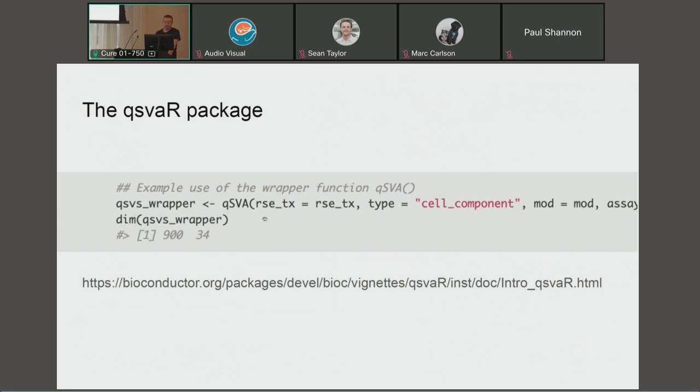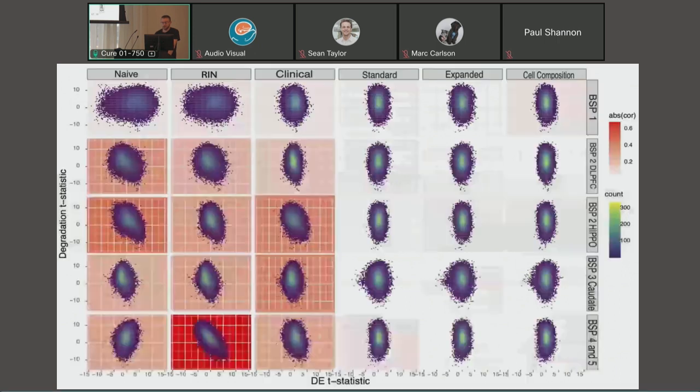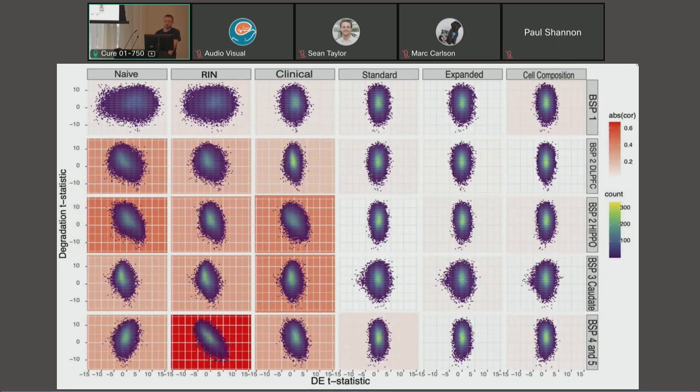And so this is the qSVA function. It takes a range summarized experiment of transcripts. There's a couple models that I don't have time to explain here. But I want to get to some results. So this is all of our BrainSeq data across different experiments. By color here, you can see which models are still heavily associated with degradation. What you see here is these are our three qSVA models that effectively remove that.